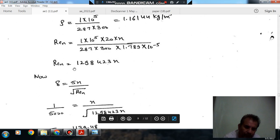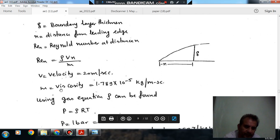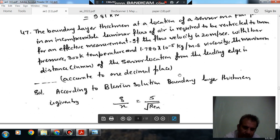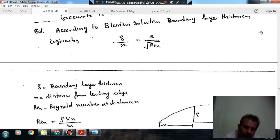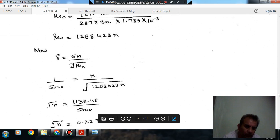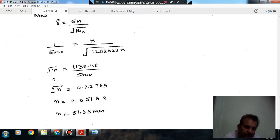Now we can find the boundary layer thickness. We are putting the value of Rex, and delta is given as 1mm, which is 1 by 1000 meter. From this, we can determine x. So x comes out as 51.93 mm or 0.05193 meter.